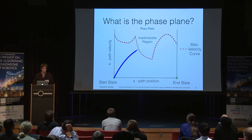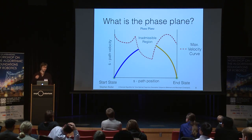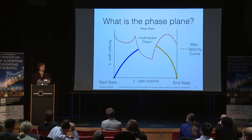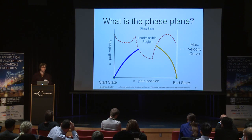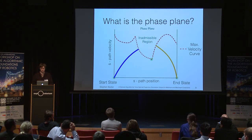Unfortunately, in reality we can rarely do that so simply, because the dynamic constraints induce inadmissible regions within the plane. For example, from the equation of motion, velocities above the constraint curve would require more torque than the system is capable of supplying, so we clearly can't pass through these regions. We need to find control switches that allow us to navigate around the inadmissible region. In prior methods, they reason over specific constraint functions — such as the equation of motion or joint velocities — to find those switches and then expand to find a new trajectory.